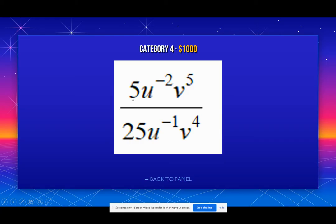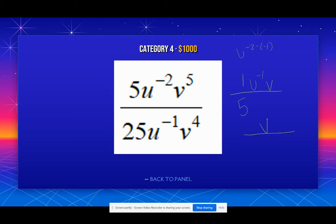For the next one, we do 5 and 25 — that becomes 1/5. Negative 2 minus a negative 1: the negative and negative become a plus, so negative 2 plus 1 is negative 1. Then 5 minus 4 is positive 1 — as professionals, we don't write that little 1 on top, it's implied. We can't have a negative exponent, so we bring it down to the denominator, giving us 1 over 5U. Make sure you realize that from 5 and 25, you divide out a 5, giving 1/5, then use our subtraction rules.